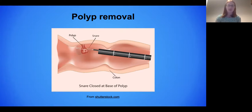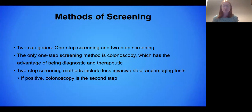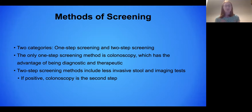There are multiple types of screening these days — two different categories: one-step screening methods and two-step screening methods. The only one-step screening method is a colonoscopy, because it's both diagnostic and therapeutic — we can take out polyps, so you find it and you take it out. There are multiple two-step screening methods, and several have been developed in the last decade or so. These are less invasive in general, but if they're positive, the second step would be to do a colonoscopy.